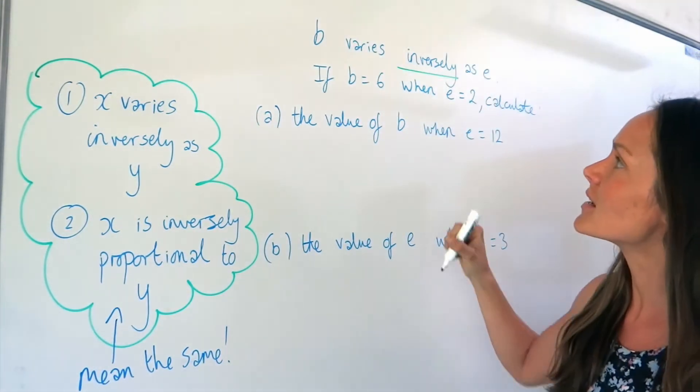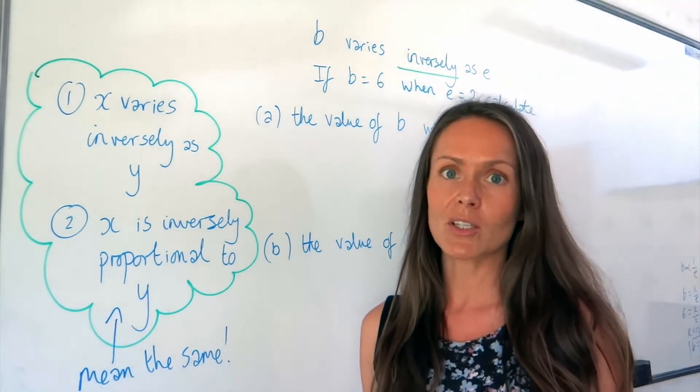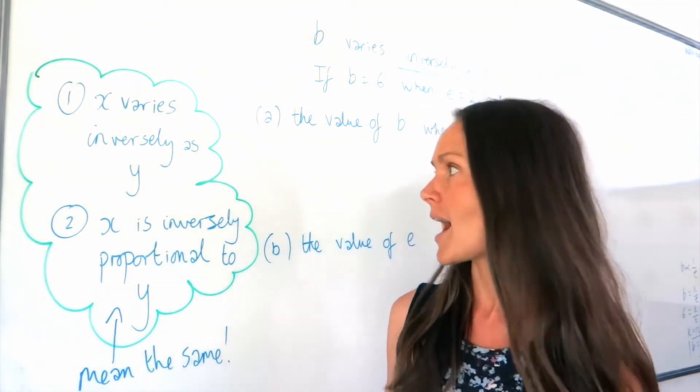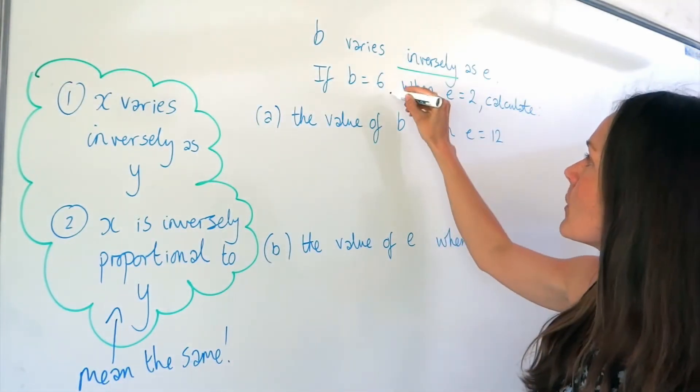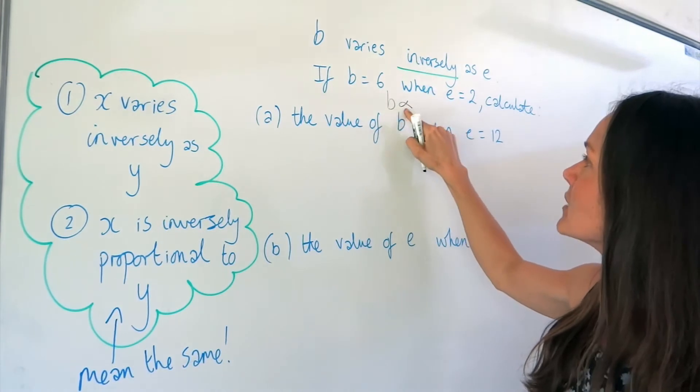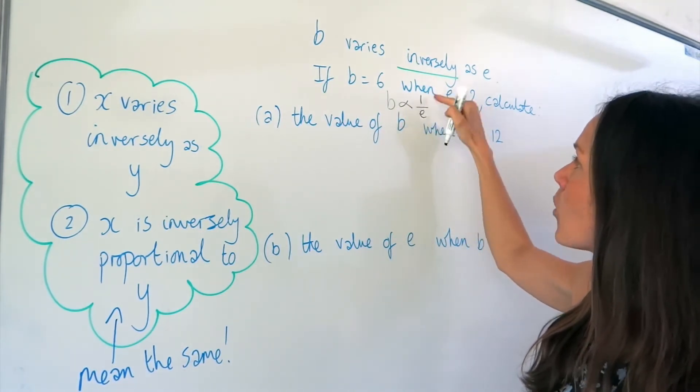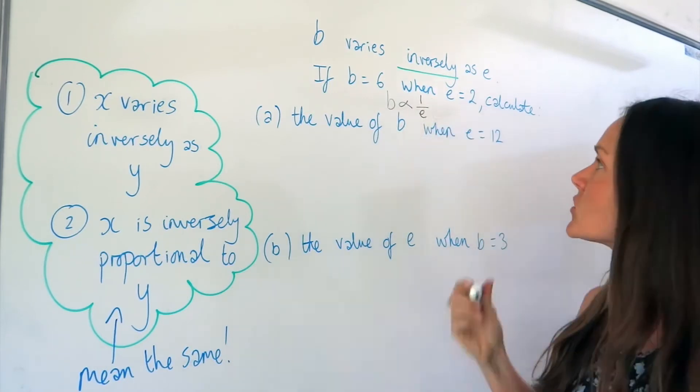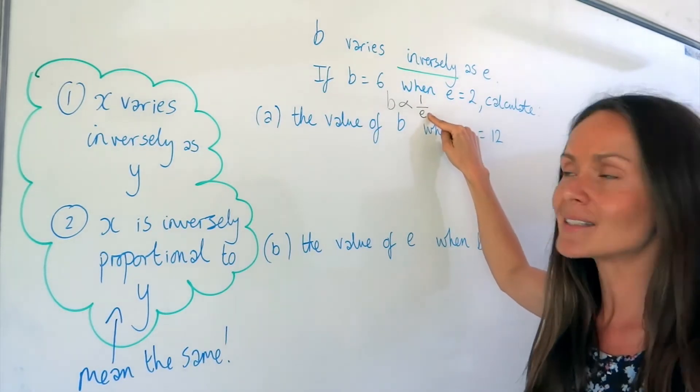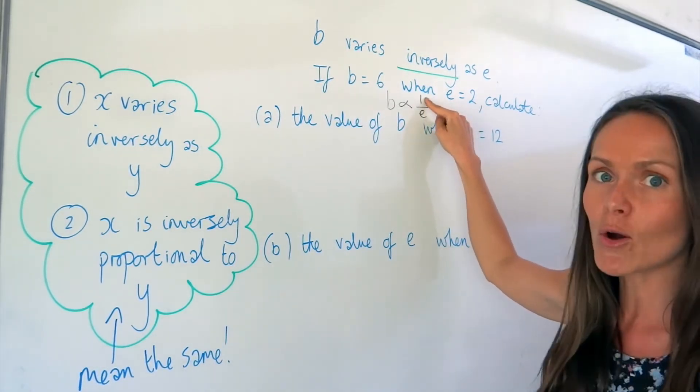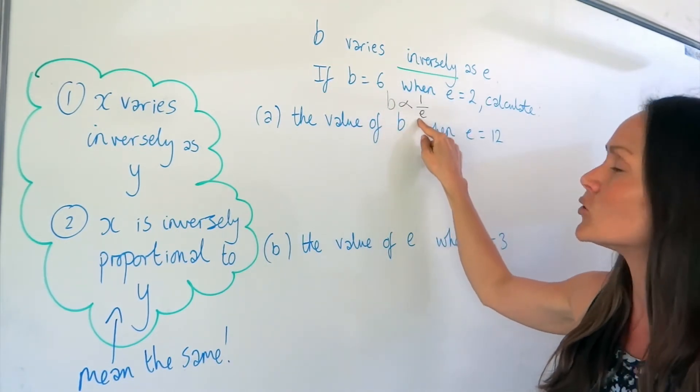In this question, it says B varies inversely as E. So it's very similar to the questions on direct proportion and variation, except this time, instead, when we write that funny symbol, so B is proportional to E, we write it as 1 over E instead. So whenever it's inversely, you need to remember to write the second letter as the denominator, and 1 goes on top. So this means B is inversely proportional to, or it varies inversely, to E.